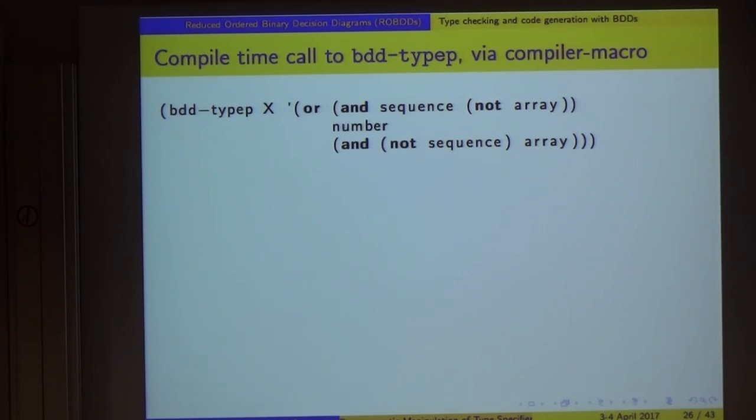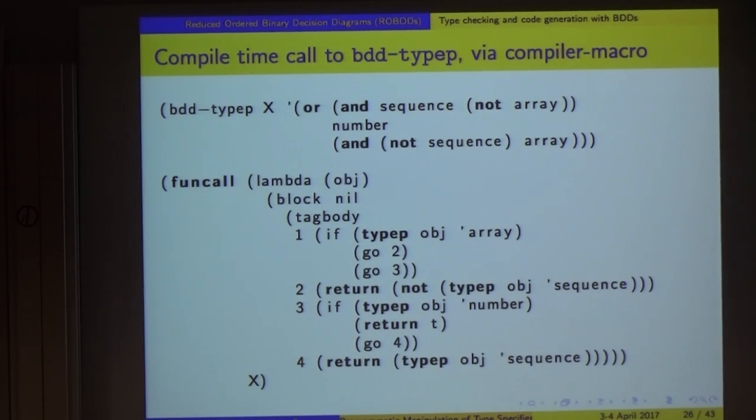If we have the type expression at compile time, we actually can do even better than that. Thanks to a compiler macro, we can check if we have a statically expressed type expression, then we can expand into a piece of functional and precise code using tagbody with go statements. There's one state per node in the binary decision diagram, and walking through this with the go-tos is equivalent to walking through the binary tree. The code will execute in linear time, and the size of the code is much smaller than the size of the entire binary tree.